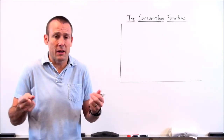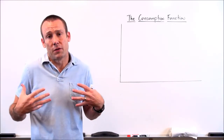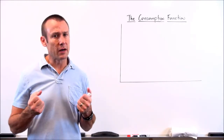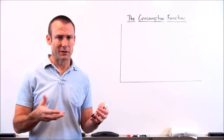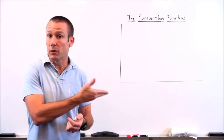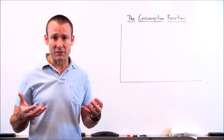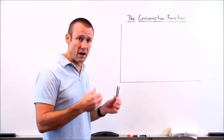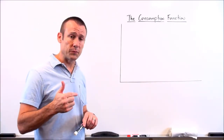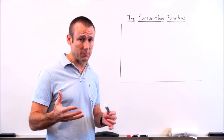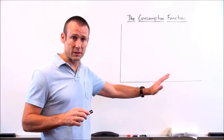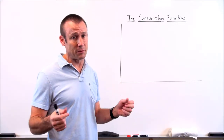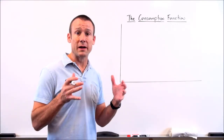Hopefully that makes sense — our income is probably the number one thing that determines our consumption. You'll sometimes hear it called current disposable income, but that's just disposable income — what we're currently making. Since it is the independent variable, I'm going to put it on the horizontal axis. I know that's a little surprising because economists sometimes mess that up, at least when the curves are supply and demand curves.